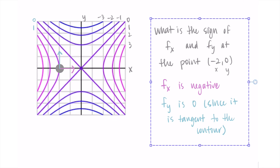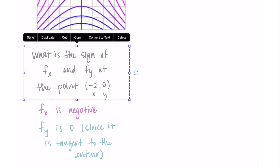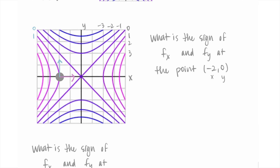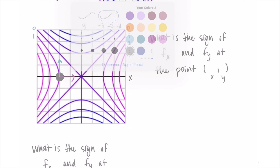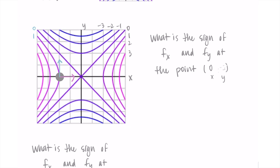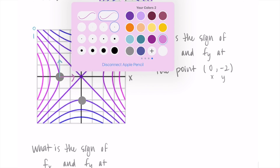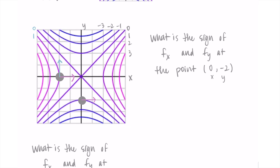Let's look at the point 0, negative 2. We're right here. First, looking at the rate of change in the x-direction — we're actually tangent to the contour here again, so the partial derivative with respect to x is 0. Then looking at the partial derivative with respect to y, we're going from a curve at about negative 1 uphill to one that's 0. We're going uphill, so the partial derivative with respect to y is going to be positive since we're increasing.